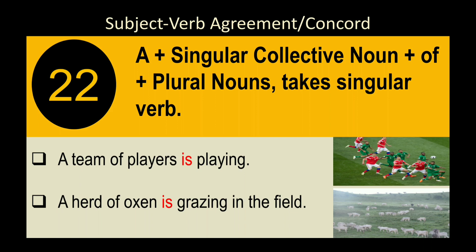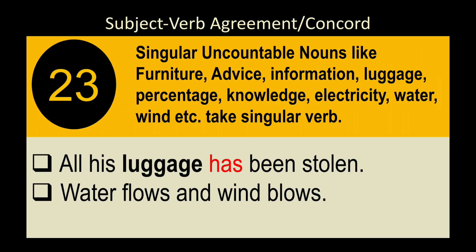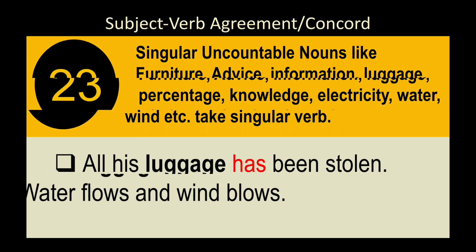Rule 24: 'A' plus a singular collective noun plus 'of' plus plural noun takes a singular verb. Examples: 'A team of players is...' — 'players' is plural but 'a team of players' is singular. 'A herd of oxen is...' — 'oxen' is plural but 'a herd of oxen' is singular. Rule 25: Singular uncountable nouns like 'furniture,' 'advice,' 'information,' 'luggage,' 'knowledge,' 'electricity,' 'water,' 'wind,' etc. take a singular verb. Examples: 'All his luggage has been stolen.' 'Water flows.' 'Wind blows.'